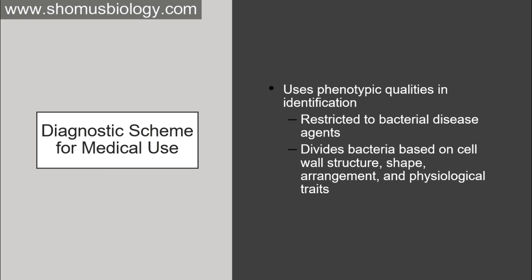For medical use, there are diagnostic schemes based on phenotypic qualities for identification. These are restricted to bacterial disease events and divide bacteria based on cell wall structures, shape, arrangement, and physiological traits. Commonly, when trying to identify a bacterium, the first step is to assess its morphology, shape, structure, and arrangement, since serological tests are not available from day one. Because bacterial infections spread fast, a doctor takes decisions based on microscopic evidence to start treatment. Confirmed results using serological methods are then pursued for specific antibody-based medication.